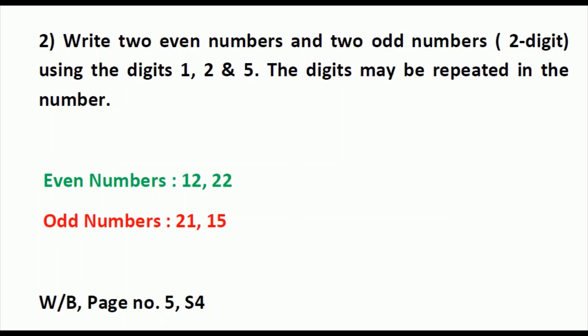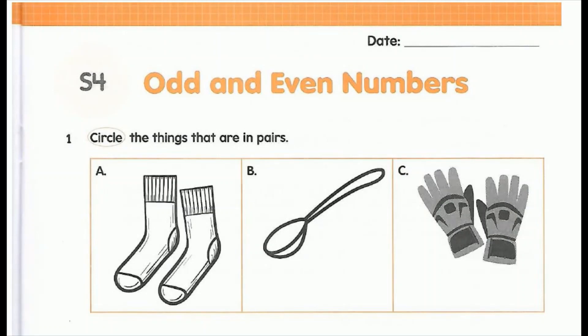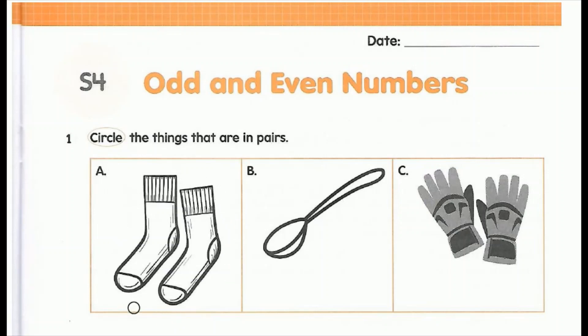Now open your workbook, page number 5, S4 of block 1. Here you have to write today's date. First question: circle the things that are in pairs. First one is a pair of socks, so you can circle the socks.